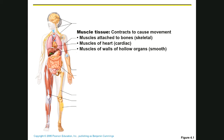Skeletal muscle is called that because it's attached to bones. Any kind of muscle attached to bones — like in your arms, legs, and face — those are skeletal muscles. Skeletal muscle is voluntary, so this is how we get voluntary movement.